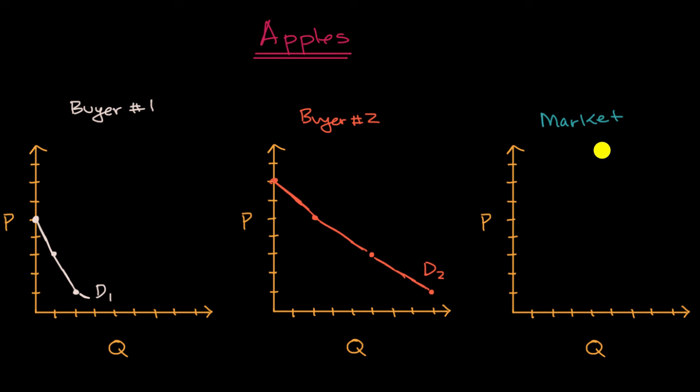And most markets will have many tens or hundreds of thousands of actors in it, maybe millions or tens of millions of actors in it. But for the sake of simplifying things, we're going to assume that the apple market has only two buyers. And we have their demand curves right over here.